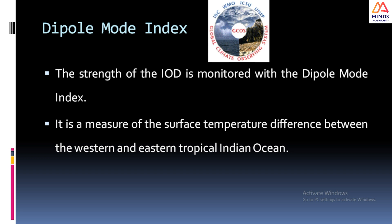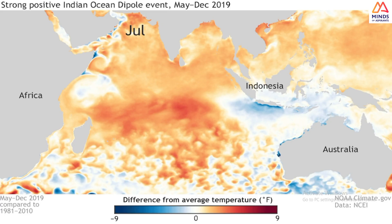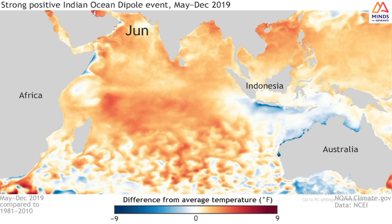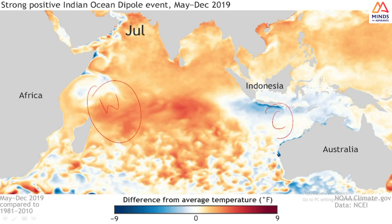The Dipole Mode Index (DMI) is the measure of the surface temperature difference between the western and eastern tropical Indian Ocean. It shows how positive or negative the value of this index is, and the strength of the dipole is monitored using this index. The DMI is released on a monthly basis. It had extreme positive phases in 1994, 1997, and 2019. The 2019 event was the most extreme positive IOD effect in almost 40 years, peaking in October and November, with the most warm water in the western Indian Ocean and cold surface temperature in Indonesia.